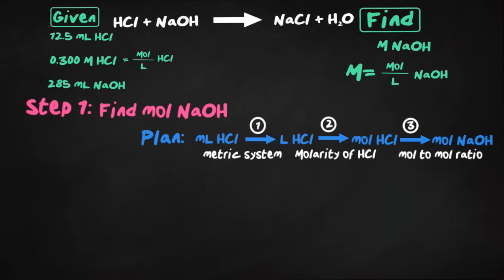From there, we're going to go from liters of HCl to moles of HCl using the molarity of HCl that was initially given. And then we'll get to moles of HCl, then we'll use a mole-to-mole ratio from our balanced equation, and get to moles of NaOH.